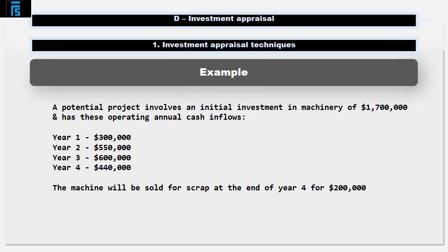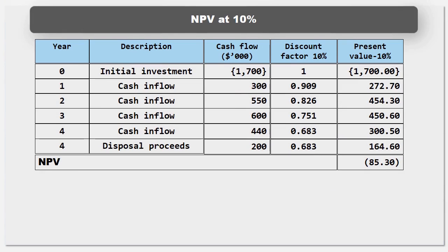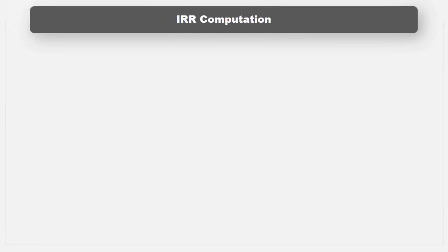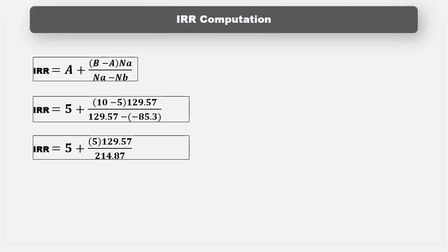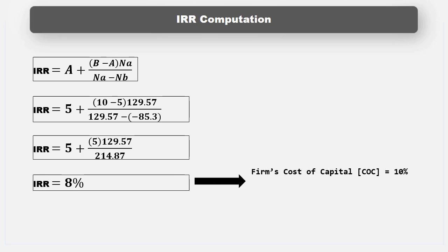Let's calculate the IRR of our earlier example. A potential project involves an initial investment in machinery of $1.7 million with annual cash inflows of: Year 1 $300,000, Year 2 $550,000, Year 3 $600,000, and Year 4 $440,000. The machinery will be sold for scrap at the end of Year 4 for $200,000. The NPV at 10% was negative $85.3. If we rerun the NPV calculation at 5%, we get a positive NPV. So the IRR must be somewhere between 5% and 10%. Applying the formula, the IRR is 8%. If the firm's cost of capital was 10%, we should reject this project as its return is less than the cost of its finance.